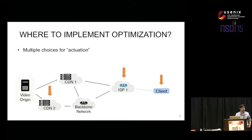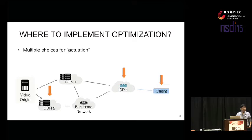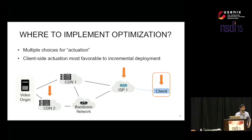There are many layers and many places we could choose to optimize. We could choose to do it at the CDN layer, at the server infrastructure, in the network, or in the client end application. All are valid approaches and all will have benefit. We chose to focus more on the actuations in the client because it is more favorable to incremental deployment in the industry — not to say that the others are not good for future work. They're actually very valid extensions of what we're doing here.